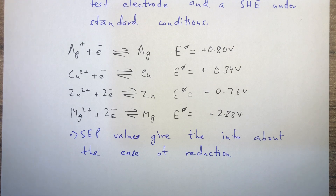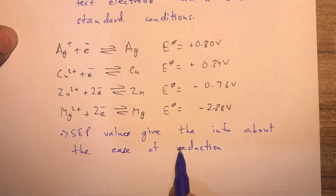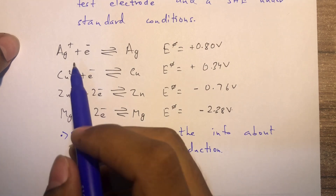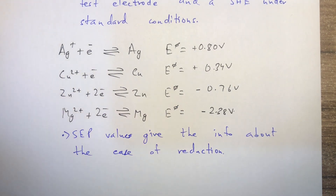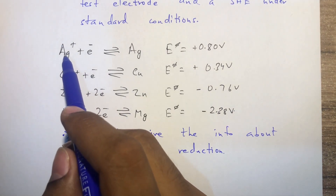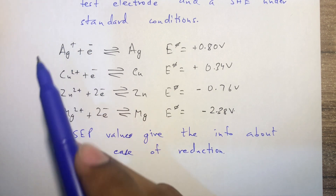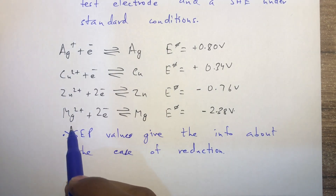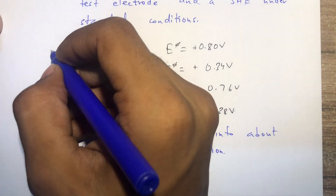The SCP value is also called reduction potential. SCP values give information about the ease of reduction. In these equations, the forward reactions are reduction reactions because there is a gain of electrons. If the SCP value is more positive, it is easier for silver ions to get reduced, making silver ions stronger oxidizing agents - because oxidizing agents get reduced. Whereas for Mg²⁺, since the SCP value is highly negative, it is difficult to reduce; it is a weak oxidizing agent.